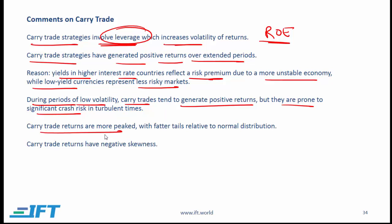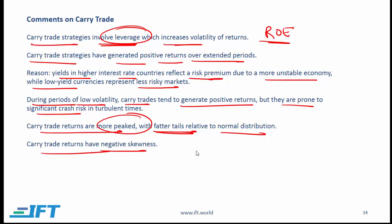Carry trades are more peaked and also have fatter tails relative to a normal distribution. Carry trades also have negative skewness. So you need to remember these three points: carry trade returns tend to be more peaked, they have fatter tails, and they have negative skewness. More peaked implies that we have frequent small returns, and the number of small returns is more than what we would expect with a normal distribution. Fatter tails and negative skewness implies that we don't have negative returns very often, but when we do have negative returns, they are fairly significant.